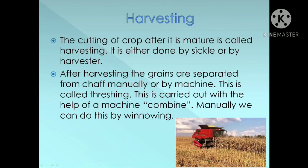Harvesting: This is the sixth step in crop production. The cutting of crop after it is mature is called harvesting. It is either done by a sickle or by a harvester. After harvesting, the grains are separated from chaff manually or by machine — this is called threshing. Threshing is carried out with the help of a machine called combine, or manually by winnowing.